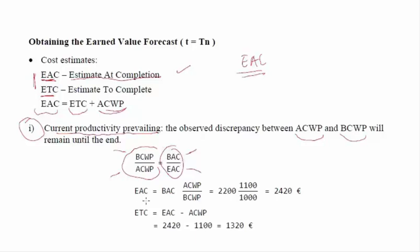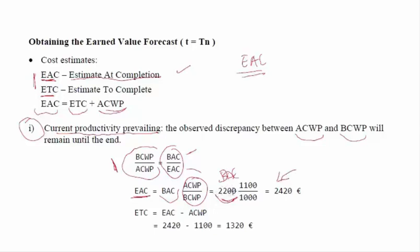From this relation, we can solve for EAC: it was supposed to spend 2200 euros, but if we are unable to correct the observed deviations, we will spend 2420 euros instead. This variable is important because the project manager needs to know the remaining money required to terminate the project. So the revised budget is 2420 euros, what was already spent is the known ACWP, and the remainder must be saved for future spending.